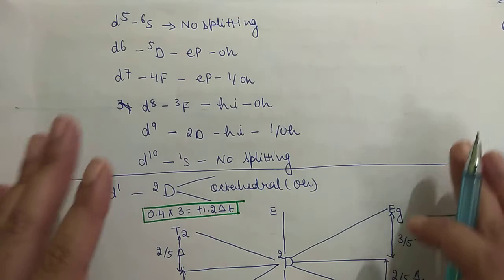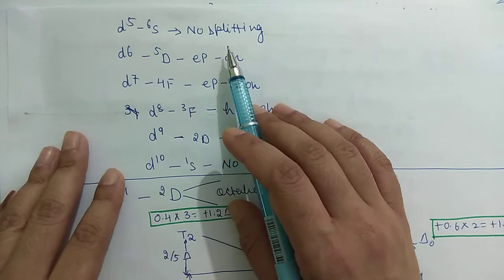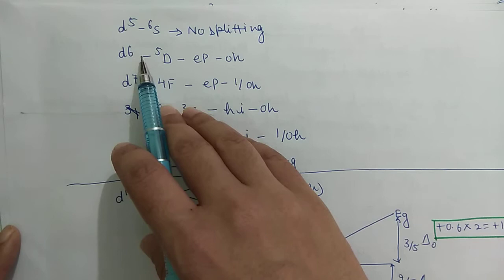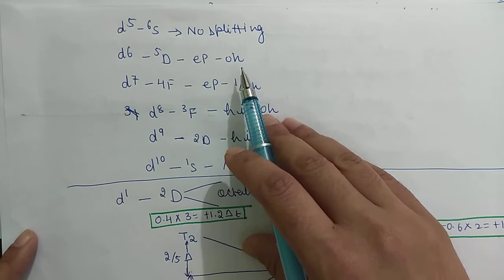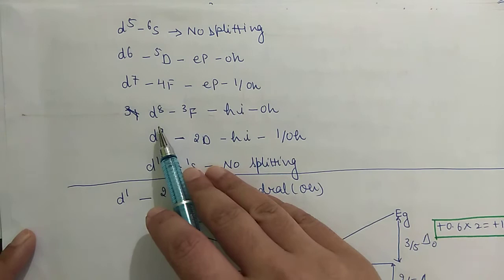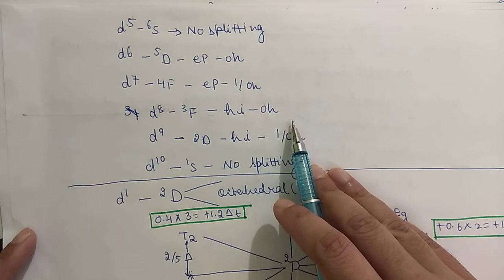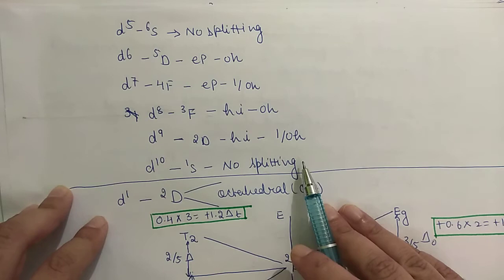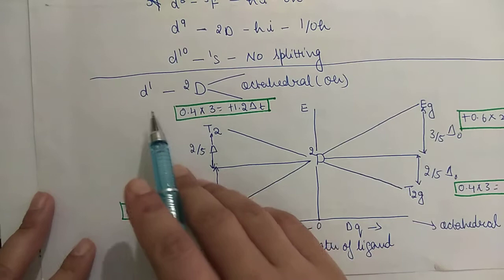This knowledge is essential before drawing Orgel diagrams. For d5 (6S term) there is no splitting, so no Orgel diagram for d5. Similarly for d10 there is no Orgel diagram. For d6 (5D term) there is electron promotion and octahedral splitting. For d7 (4F term) electron promotion occurs and it is anti-octahedral. For d8 (3F) hole inversion occurs and it is octahedral. For d9 (2D) hole inversion is there and it is anti-octahedral.